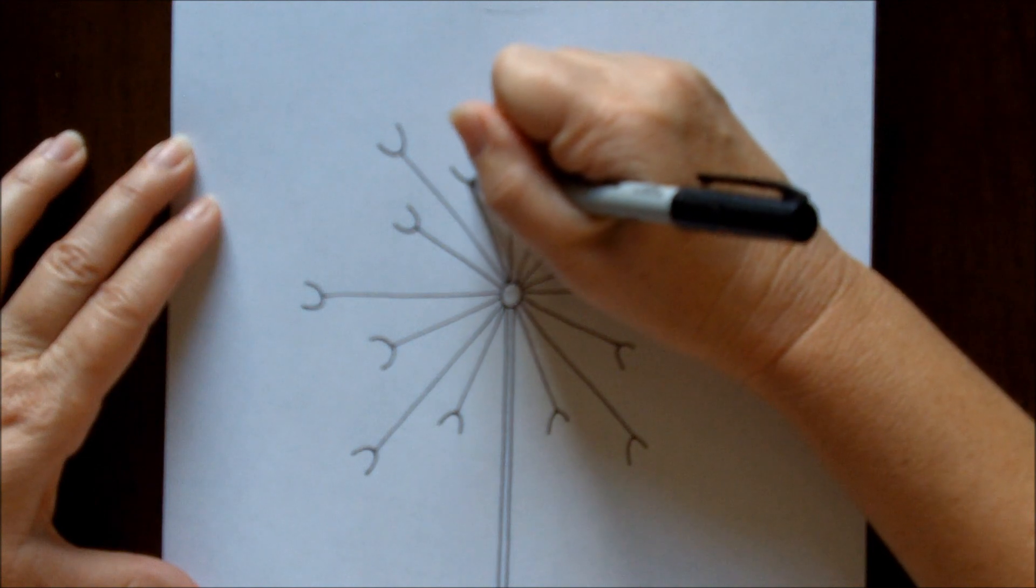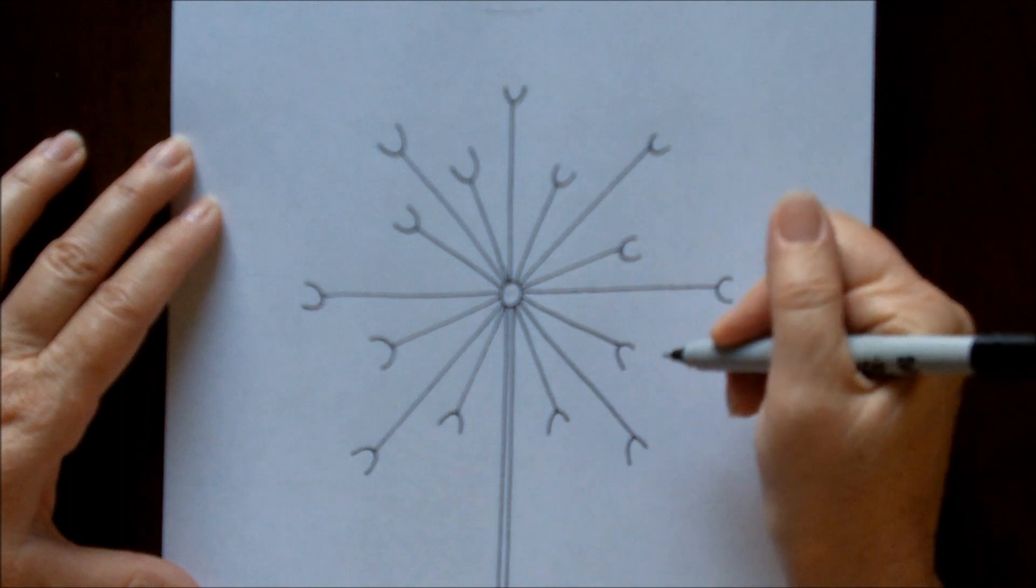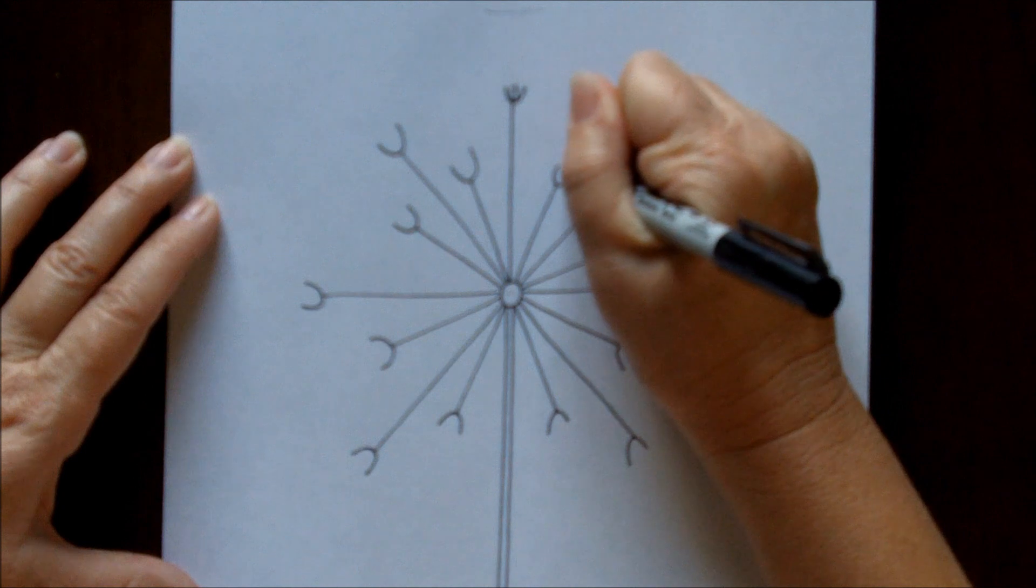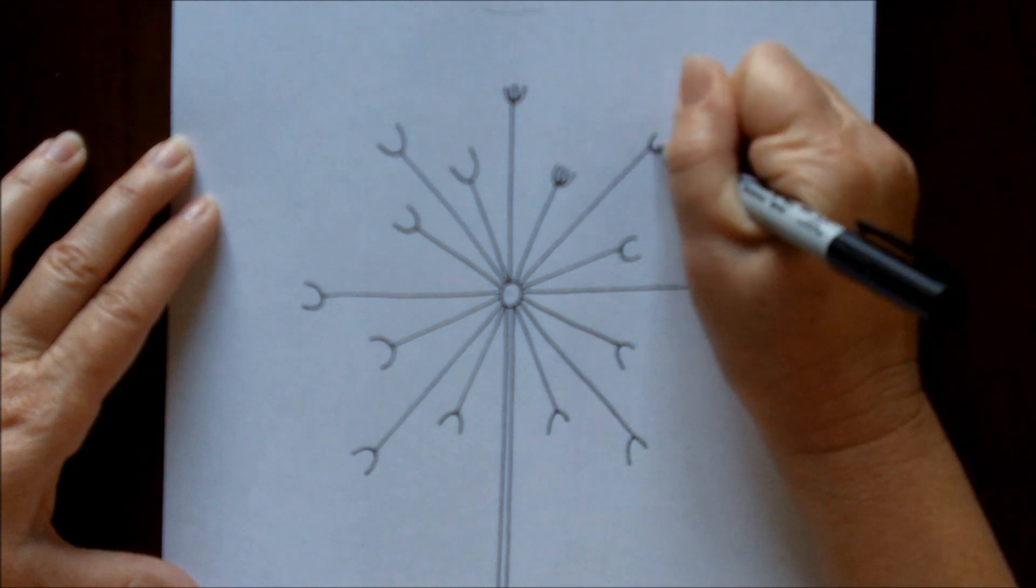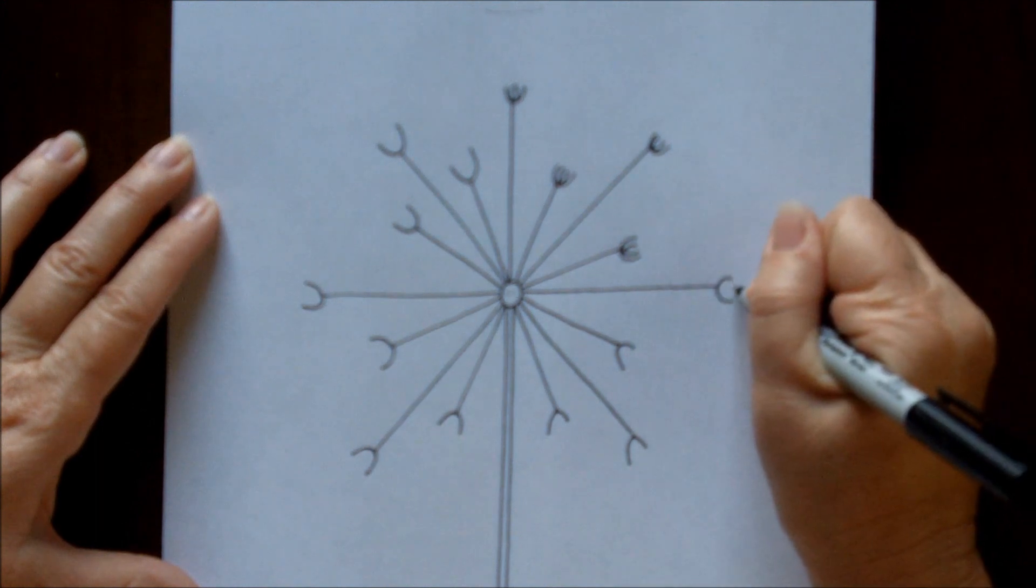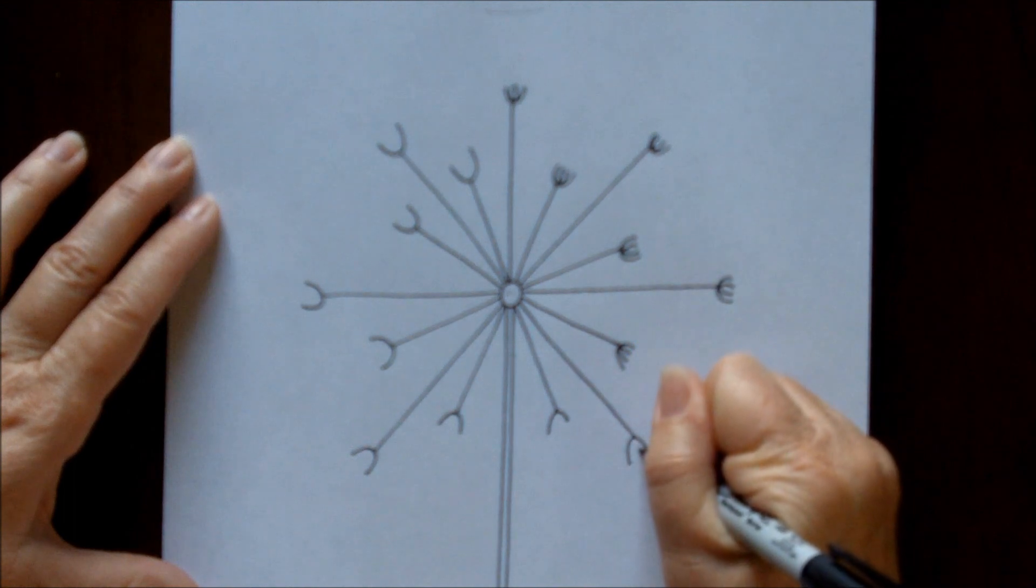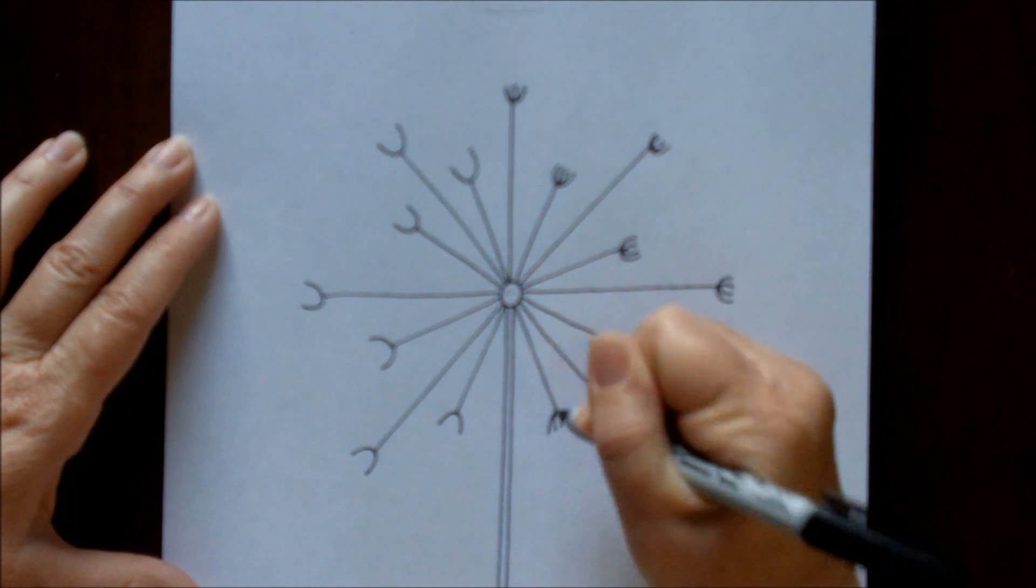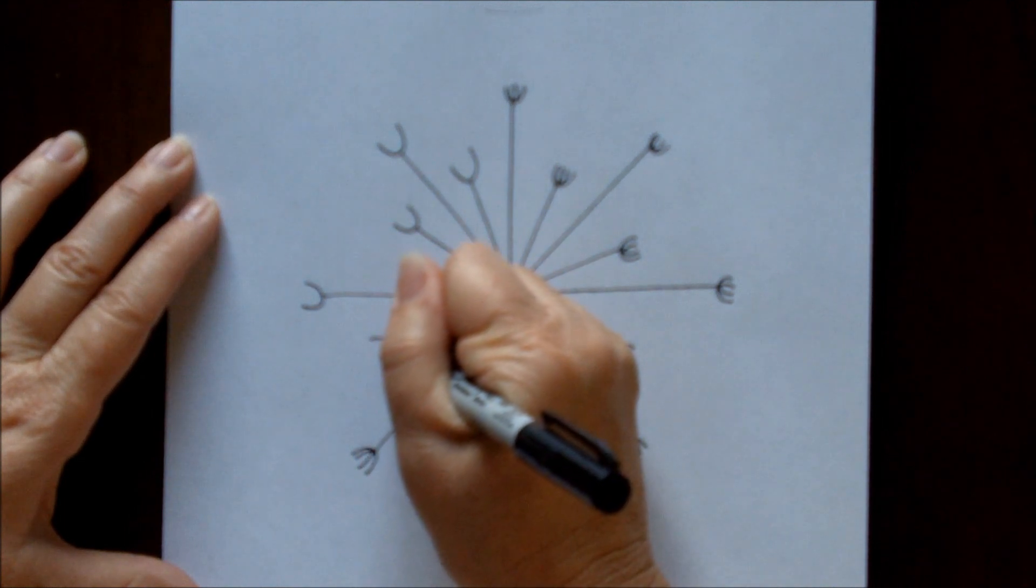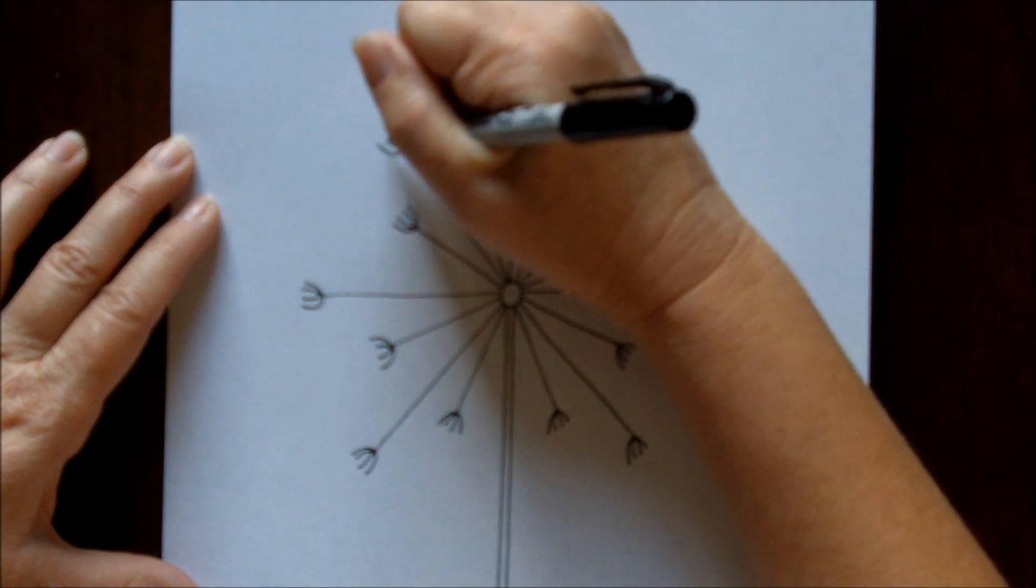Okay, now inside of each one of those you're going to want to put curved lines. So actually there will be four little ends to each one of these little umbrellas, I guess they're seed pods. Just like that, just keep going, make sure you get every one.